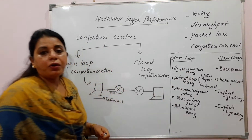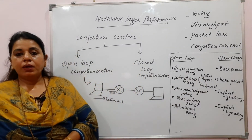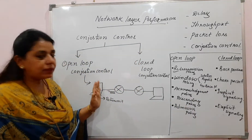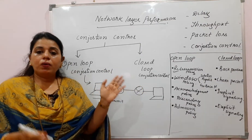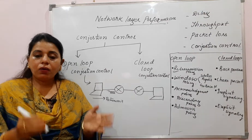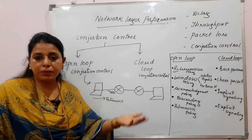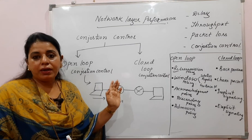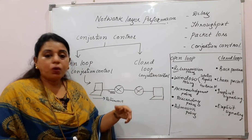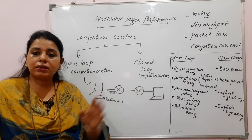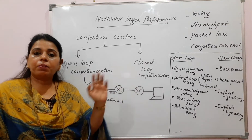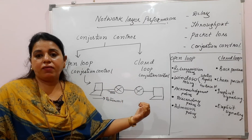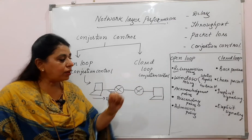The window policy involves two types: selective repeat and go-back-n. Selective repeat is better for congestion control — the sender retransmits only the specific packets that were not acknowledged. Go-back-n retransmits all packets from a certain point, even those that may have already arrived safely at the receiver, generating unnecessary traffic.